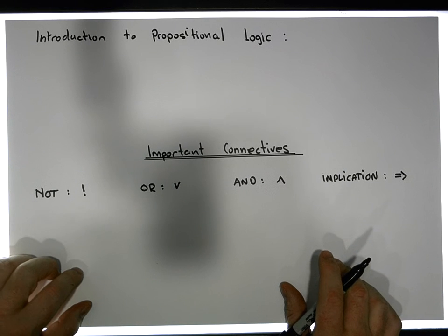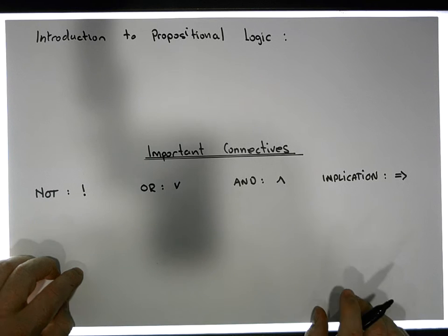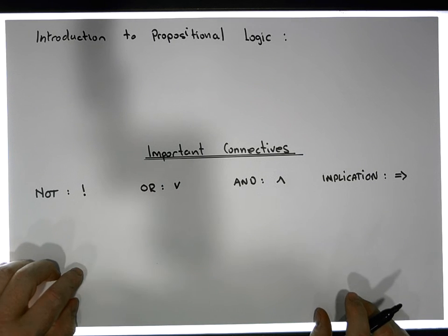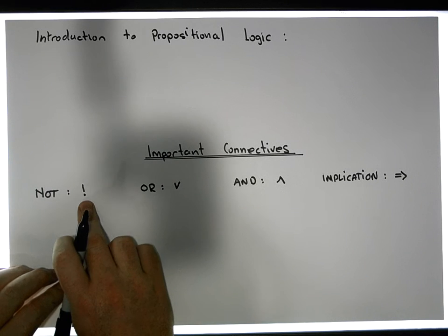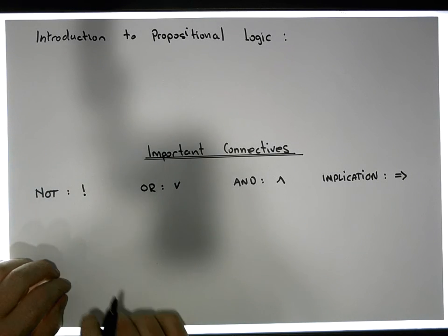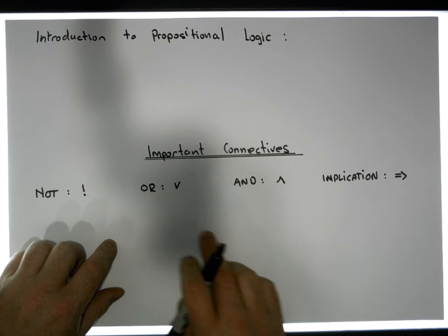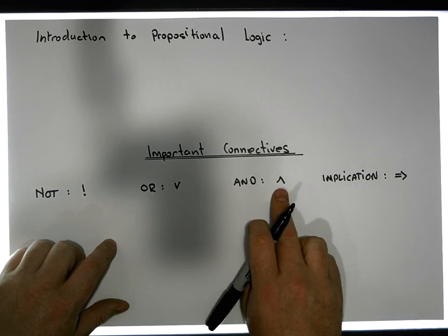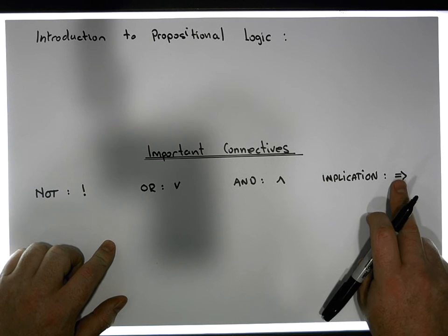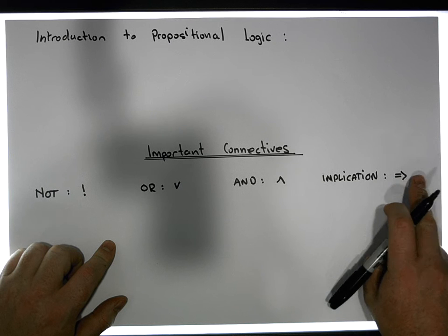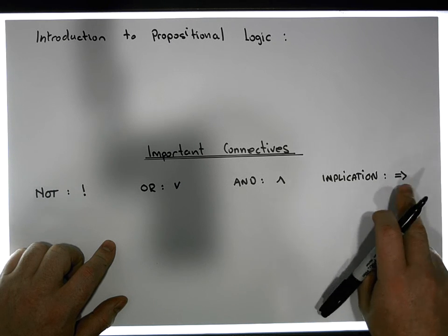But more importantly, it's an introduction to a small number of really important connectives associated with propositional logic. In particular, the NOT connective symbolised by an exclamation mark, the OR connective symbolised by a V, the AND connective symbolised by the hat symbol, and the implication connective symbolised by an equals followed by a greater than sign, or an equals followed by a right chevron.